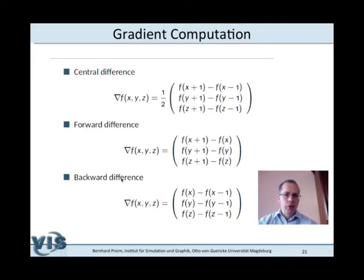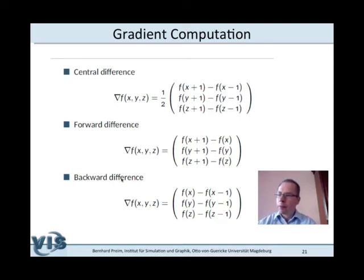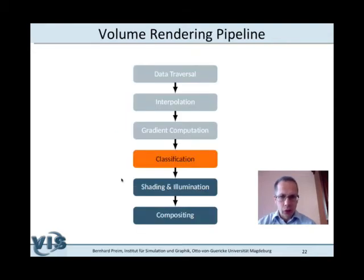However, one can construct cases where even a central difference is not a good idea. Imagine you have a very thin structure represented by only one voxel — you look forward and backward in both directions and get completely different values, but you do not take the value at x,y,z belonging to the thin structure into account. So for very thin structures that could be quite misleading. But at the end, volume rendering should not be too complex, and typically the central difference is used for gradient computation.